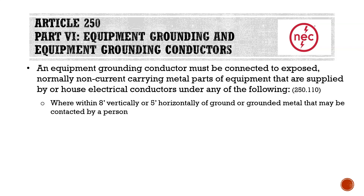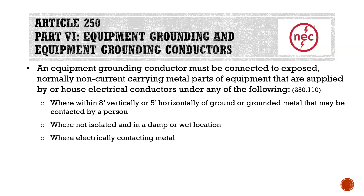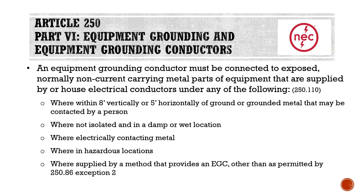The conditions requiring an EGC are: where within 8 feet vertically or 5 feet horizontally of ground or grounded metal that may be contacted by a person — this is typically the definition I go by for 'likely to be energized.' If it's within 5 feet of a current-carrying conductor, I personally consider that likely to become energized. Additional conditions include: not isolated and in a damp or wet location, electrically contacting metal, in hazardous locations, and supplied by a method that provides an EGC other than permitted by 250.86 exception 2.